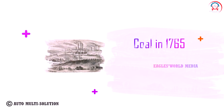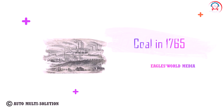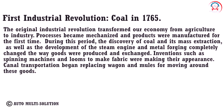First industrial revolution — coal, 1765: The original industrial revolution transformed our economy from agriculture to industry. Processes became mechanized and products were manufactured for the first time. The discovery of coal and its mass extraction, the development of the steam engine, and metal forging completely changed the way goods were produced and exchanged. Inventions such as spinning machines and looms appeared, and canal transportation began replacing wagons and mules for moving goods.